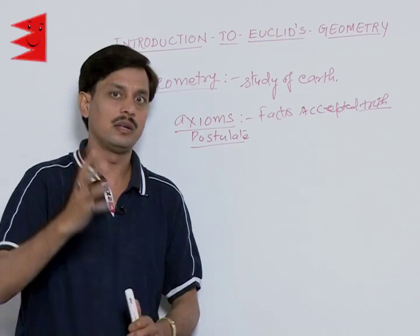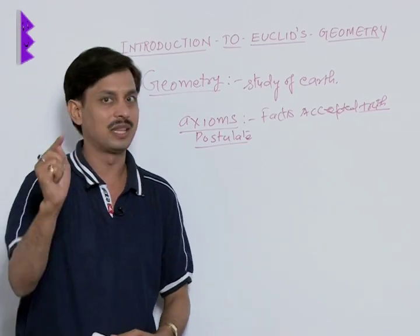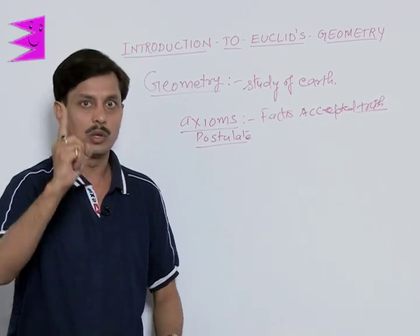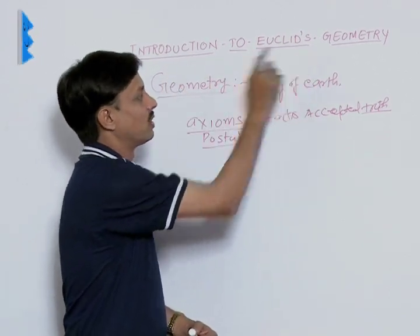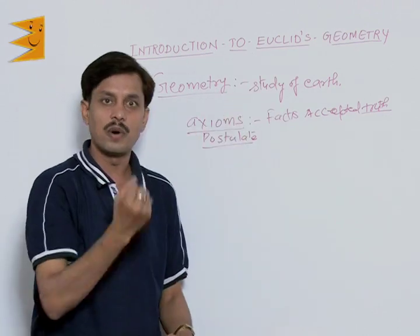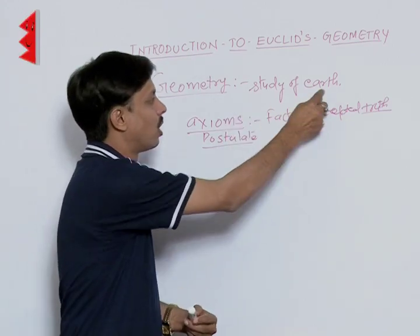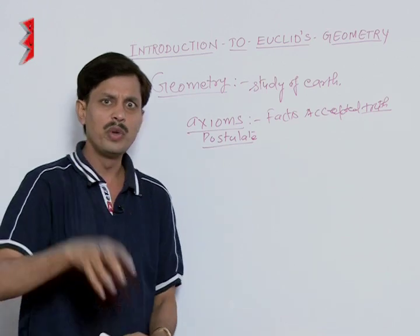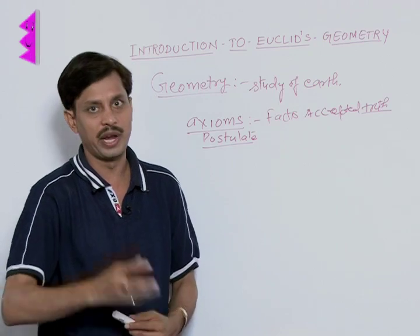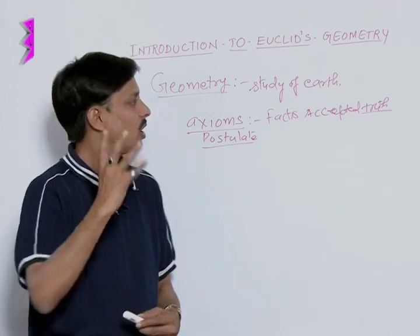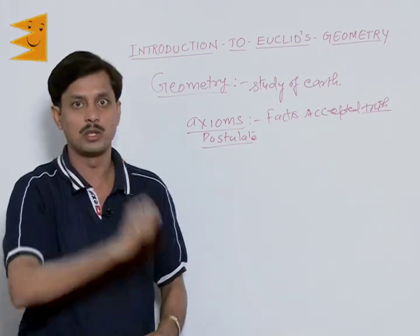Geometry was totally initiated and given by mathematician Euclid, so we start with his name — introduction to Euclid's geometry. Geometry means study of earth because geo means earth and martin means study, and their combination gives us study of earth. On the earth, we have to study the edges, the faces, the point, line, plane, surface, and all that. But before we start, we must understand a few facts of geometry.